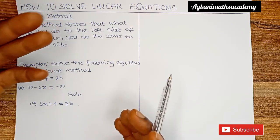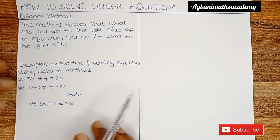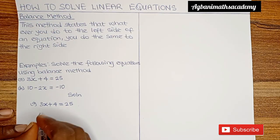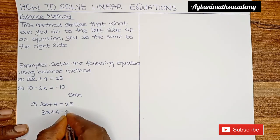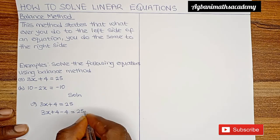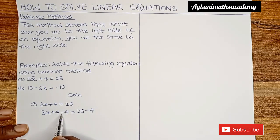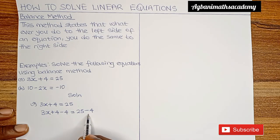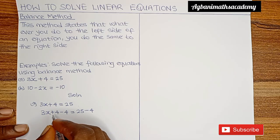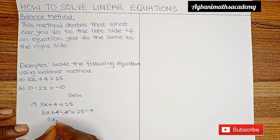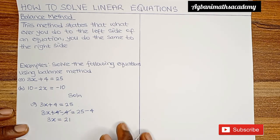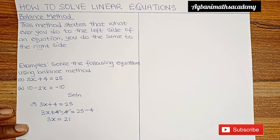Whatever you do to the left, you do the same to the right so that the equation remains balanced. So this will be: 3x plus 4 minus 4 is equal to 25 minus 4. We introduce minus 4 to the left to cancel out plus 4, and we also introduce minus 4 to the right. Plus 4 and minus 4 cancel out, giving us 3x is equal to 25 minus 4, which is 21. We have succeeded in eliminating plus 4.